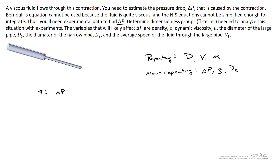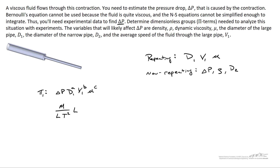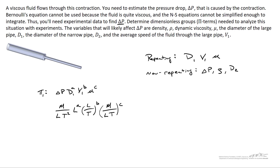Let's work on the first pi term using the first non-repeating variable, delta P. We've got D1 to the A power, V1 to the B power, and mu to the C power. Delta P has units of newtons per square meter, which gives kilograms per meter second squared — so dimensions of mass per length time squared. D1 has dimensions of length to the A. Velocity is length per time to the B. Viscosity — Pascal seconds — has dimensions of mass per length time, raised to the C power.